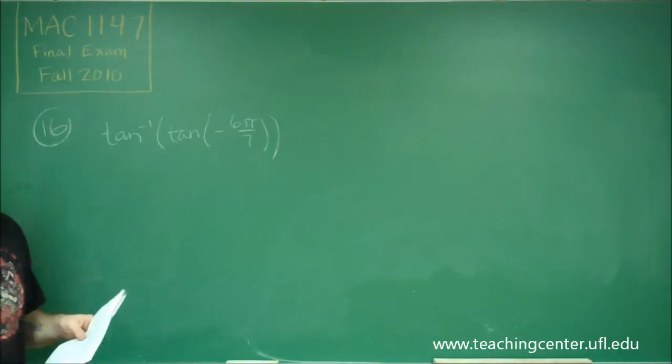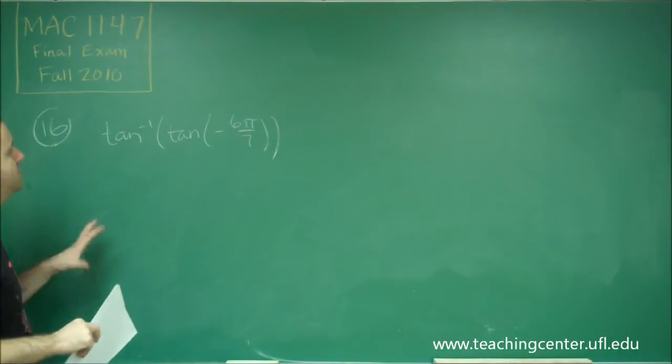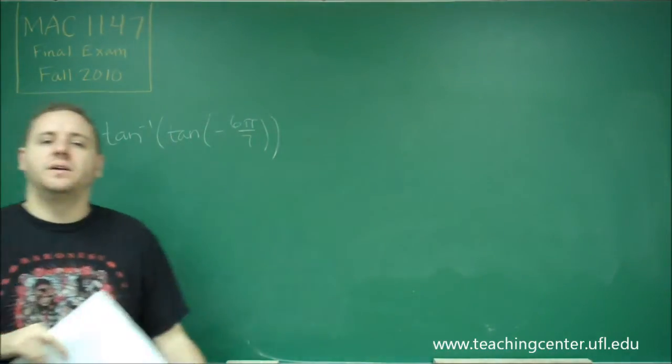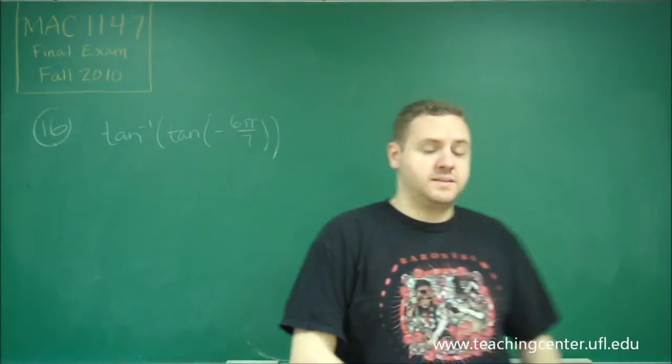So the one thing you've got to be careful about in these problems is a lot of students want to just say, okay, it cancels out and it's negative 6 pi over 7. That's not always true.